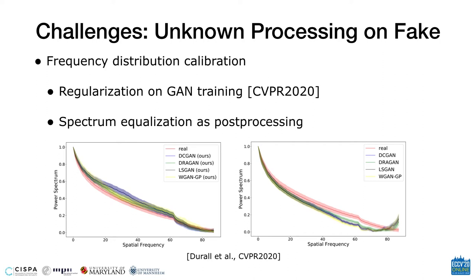However, the mentioned detection scenario has some flaws. If fake images are processed with unknown techniques, the distribution bias between training and testing data makes detection still hard. For example, recently proposed spectral regularization can calibrate the frequency distribution between synthetic and real images during GAN training, and the calibrated images may challenge detecting fake images, especially for spectral-based detectors.